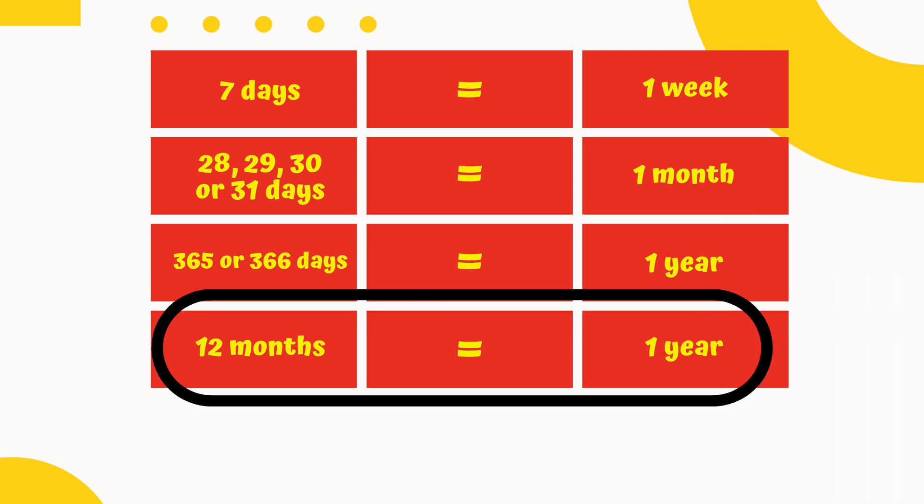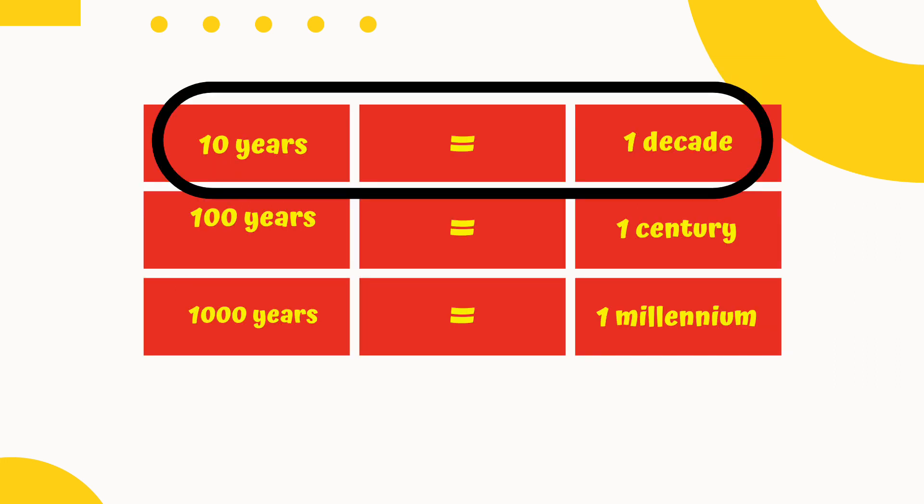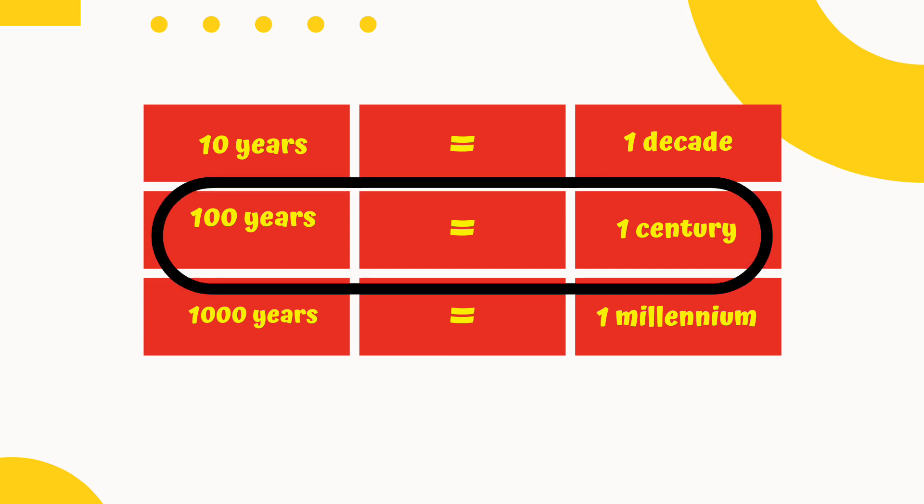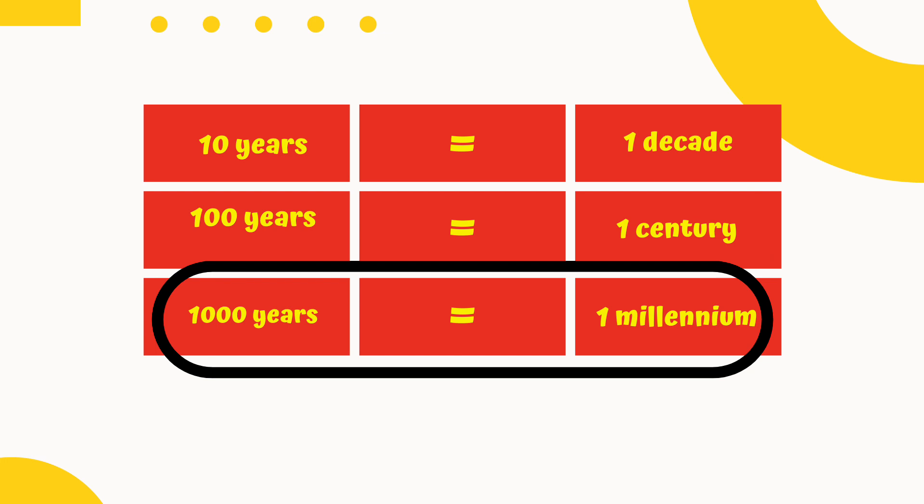12 months equals 1 year. 10 years equals 1 decade. 100 years equals 1 century. And 1,000 years is equal to 1 millennium.